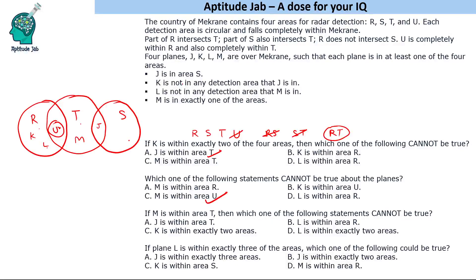We can place K and L in valid positions with no conflict. So J within area T is possible. L within area R is also possible — we verified that earlier. K within exactly two areas is also possible by placing K in the R-and-T overlap while satisfying all conditions including J in S and M in exactly one area.